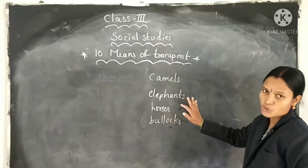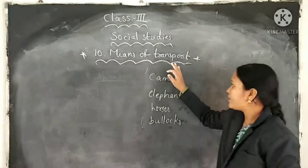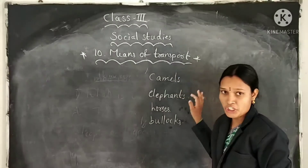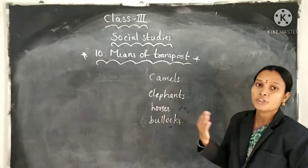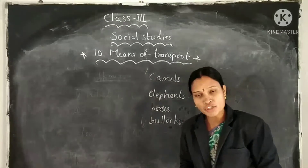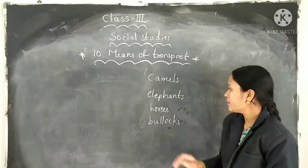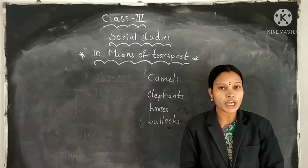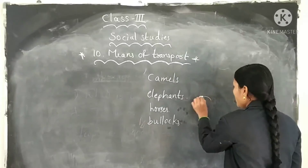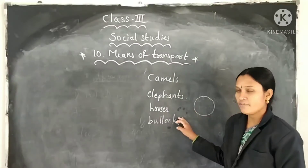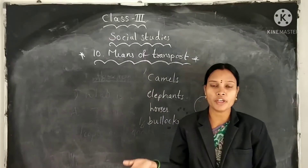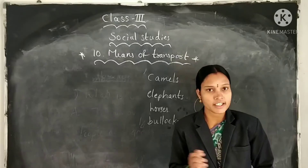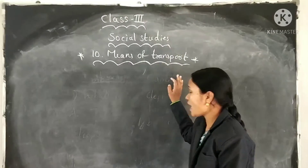These animals are used for travelling in some places. The main purpose of transport is to carry people and goods from one place to another. All these means of transport became possible due to the invention of the wheel. Modern vehicles run on coal, petrol, diesel, or electricity.